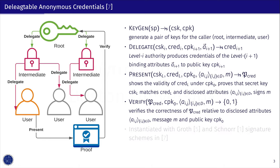One can specify which attributes to disclose in the proof, and can optionally sign a message while presenting the credential. The verification routine can be run on the credential with respect to the disclosed attributes, the message, and the root authority public key. Finally, the authors of the original delegatable scheme show how to instantiate it with Groth and Schnorr signatures in alternating bilinear groups.